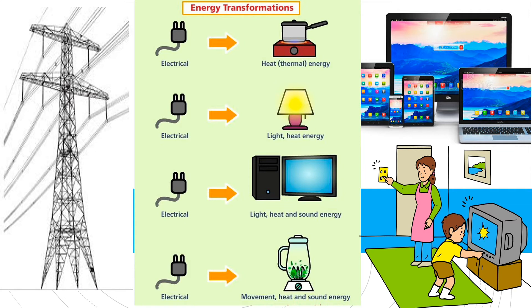For example: the electric stove, lamp, television, computer, or blender. These things shown here in the picture are examples of things that use electricity to work. Wires carry electricity into our malls, schools, and homes.